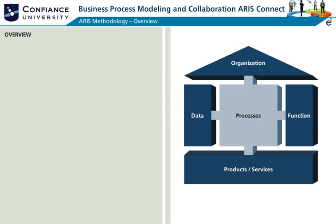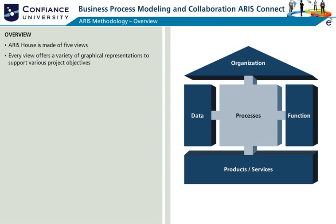The ARIS architecture uses a house metaphor to describe the different aspects or views of an enterprise. The ARIS house is made of five views. At the very top is the organizational view, supported by data, process, and systems as pillars. The output is at the very foundation of it all. Every view offers a variety of graphical representations to support various project objectives. The process view integrates all views and is therefore considered the dynamic view. All other views support the processes and are therefore considered static.